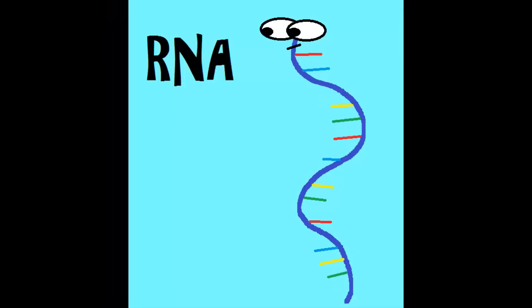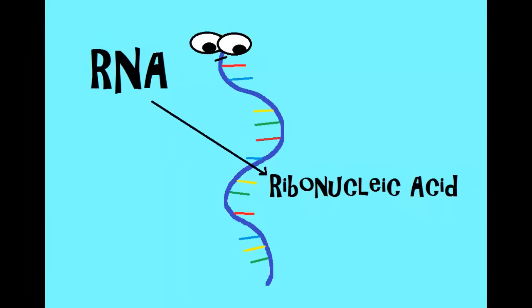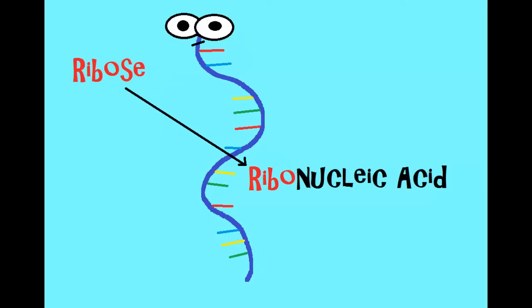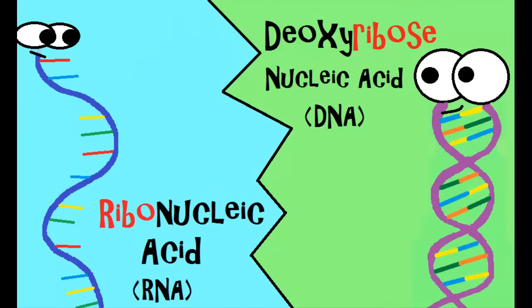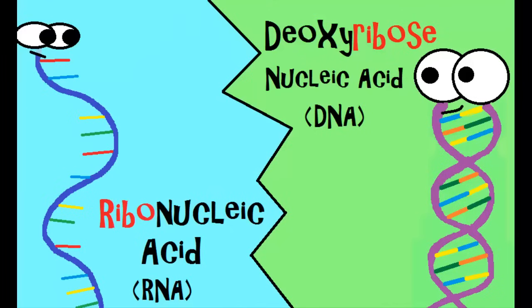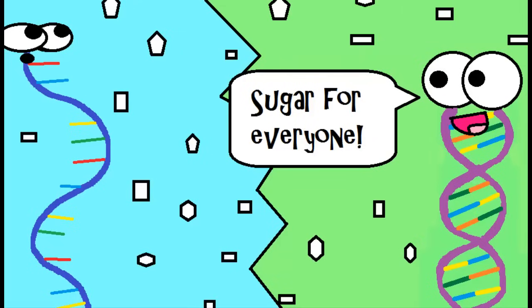RNA, on the other hand, stands for ribonucleic acid. The ribo, that's actually part of ribose, which is a sugar. So just like DNA had deoxyribose, RNA has ribose. They both contain a sugar.